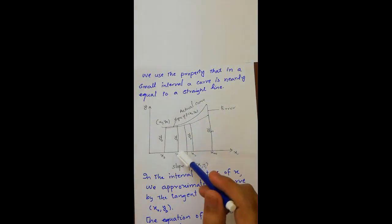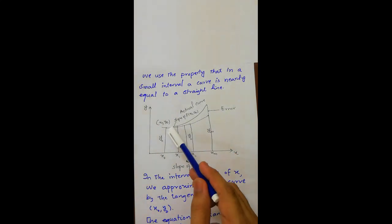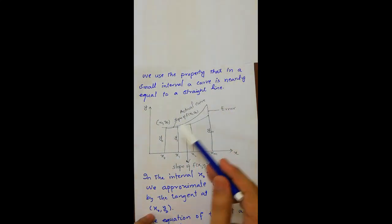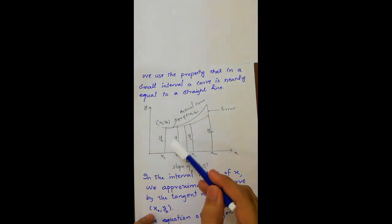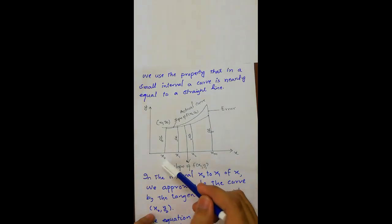If we consider this curve, this is the actual curve, which is the solution curve. And if we divide this curve in small intervals, that's x0 to x1, the second interval is from x1 to x2.